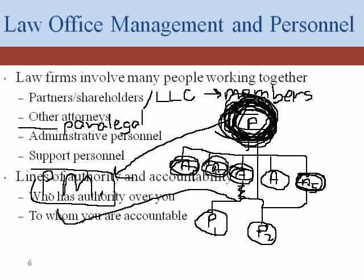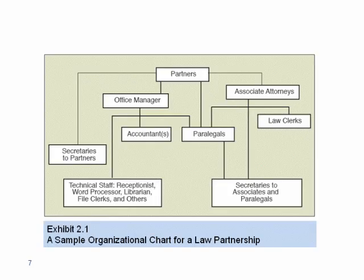Here's an organization chart from the textbook showing one method of how a partnership might be arranged. One thing we haven't talked about are secretaries. When I started practicing, secretaries were ubiquitous — a secretary would typically have three or four people on her desk: a partner, a senior associate, a junior associate, and a paralegal. That was very much the pecking order: the partner's work got done first, the senior associate's second, the junior associate's third, and the paralegal's fourth.